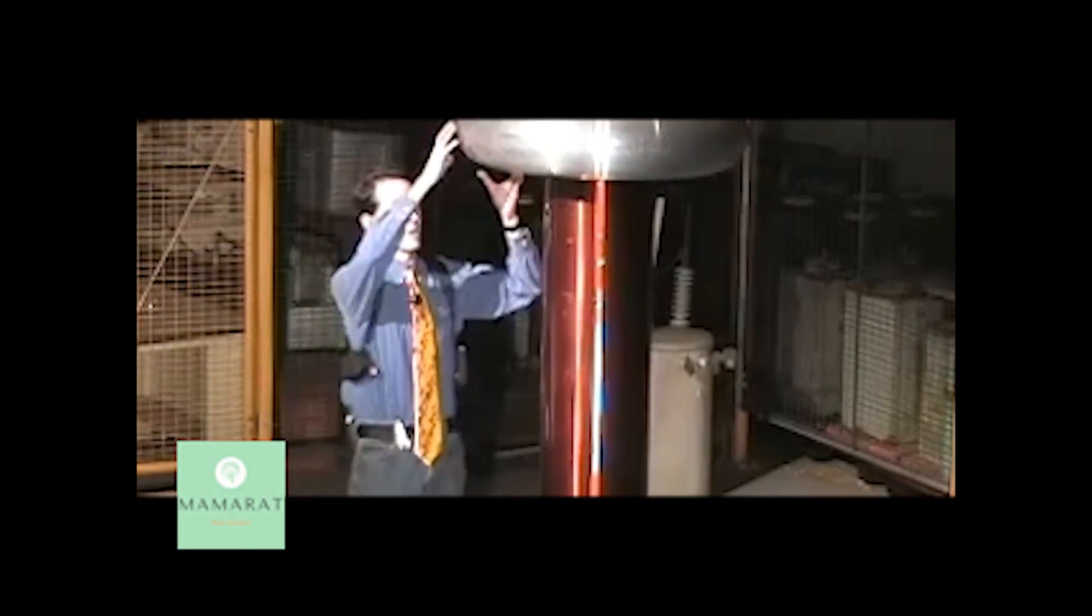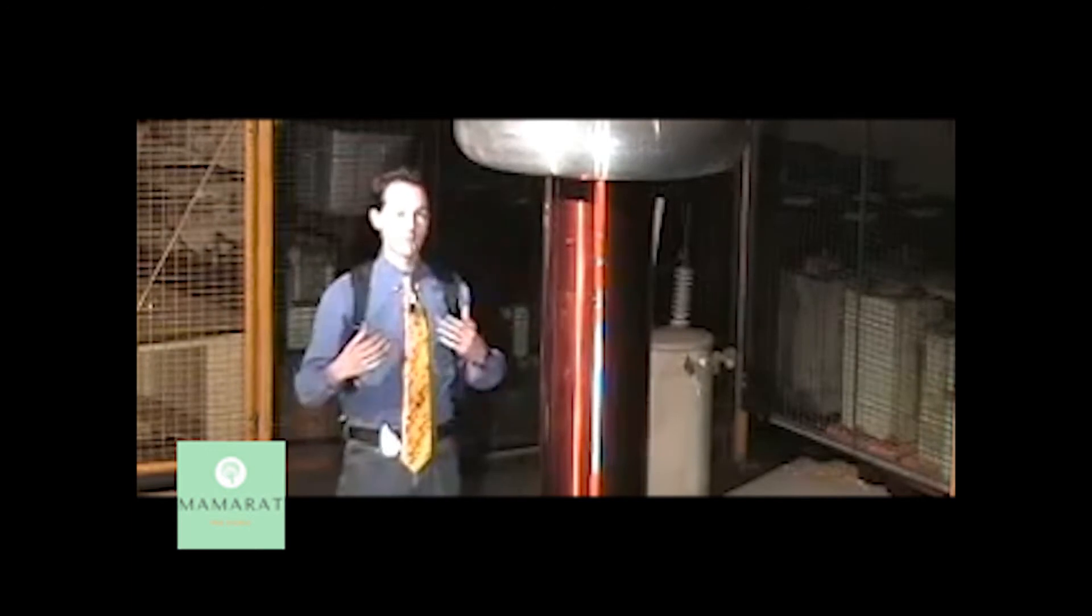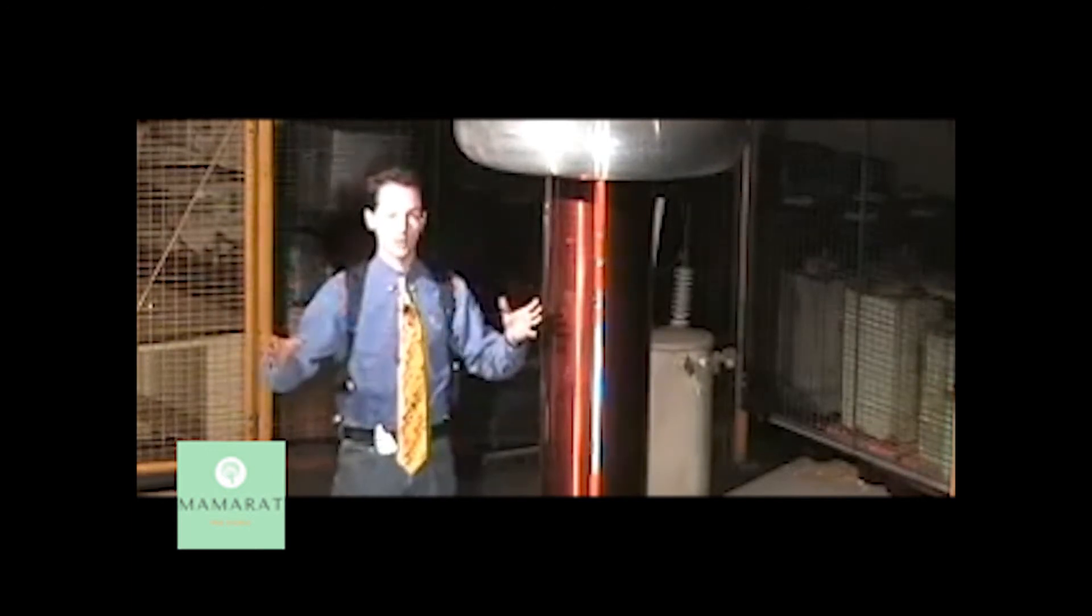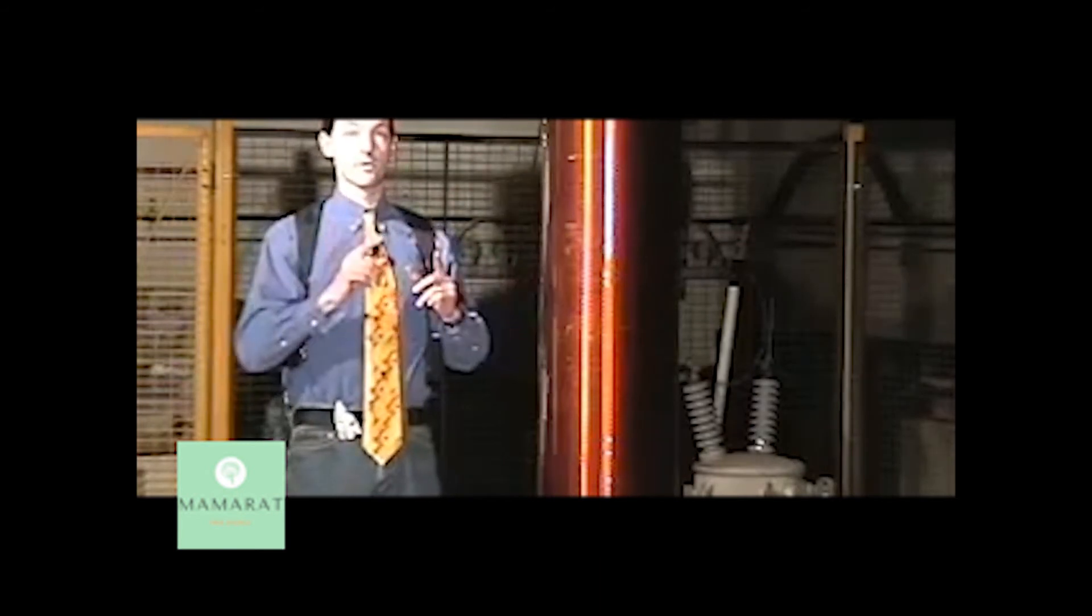By making it a large radius and very smooth, this allows us to build up a higher voltage before the electricity breaks out. If this wasn't here, the whole system would break out much earlier and we'd have much lower voltages.